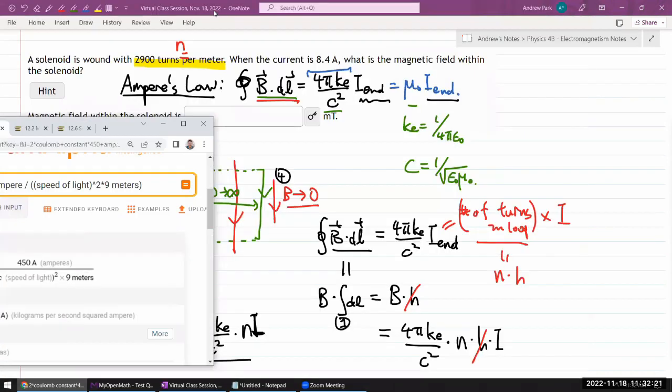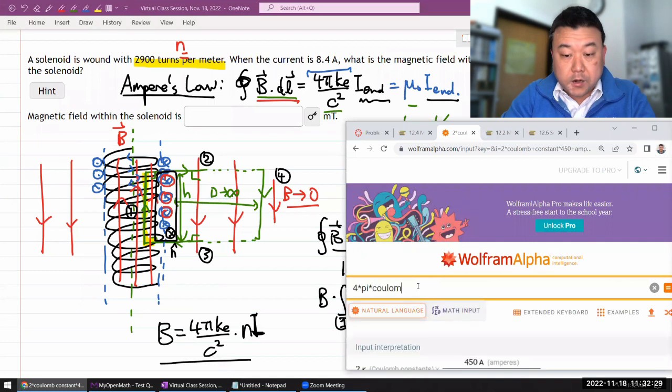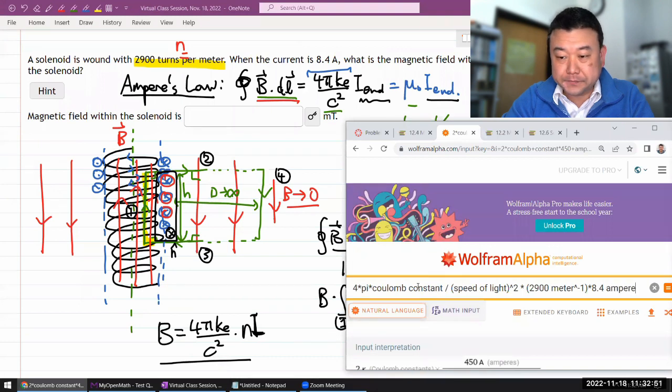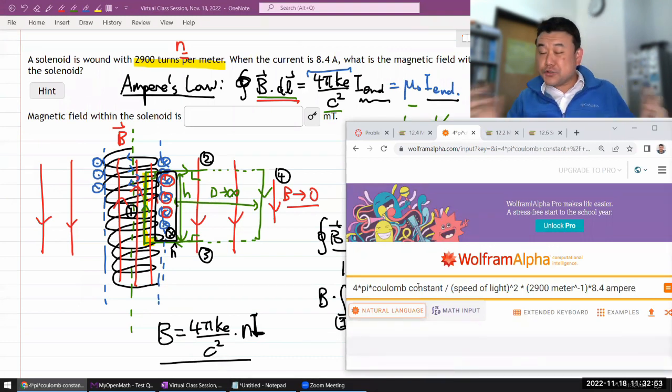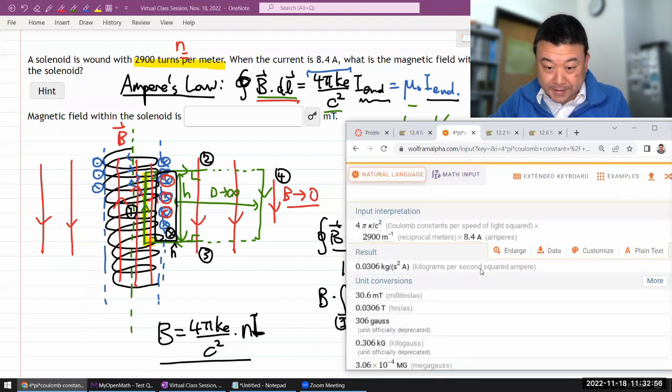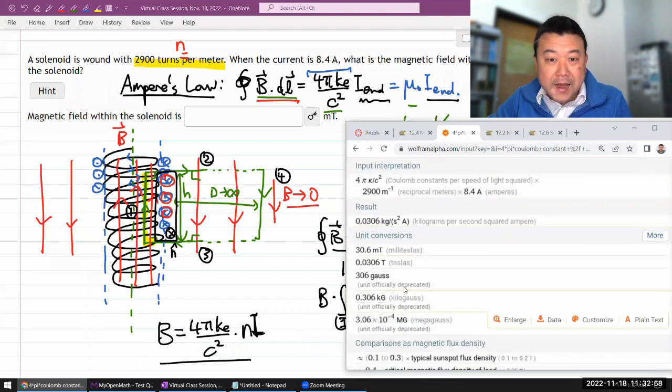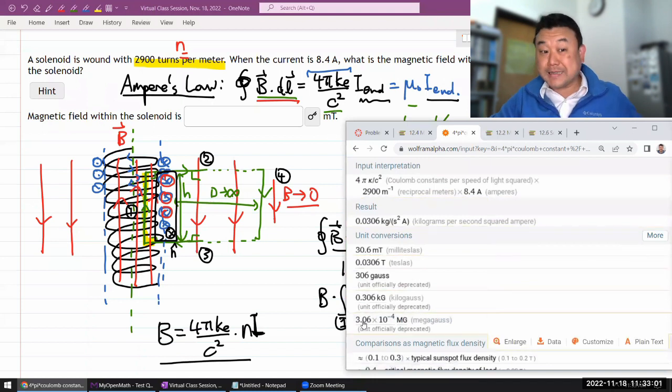I have 4π times Coulomb constant divided by speed of light squared and I have the other things. The number of turns per meter, so 2,900 turns, that's per meter, so meter raised to power minus one, times the current 8.4 ampere. And it should hopefully give me an answer in the unit of Tesla. There is this Tesla. So in milliteslas it's 30.6.